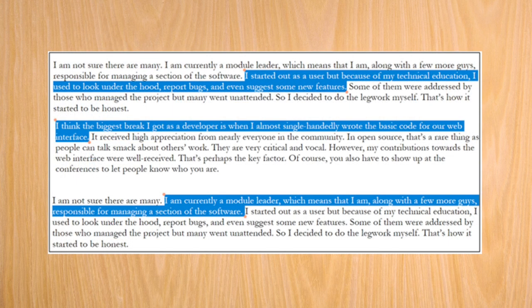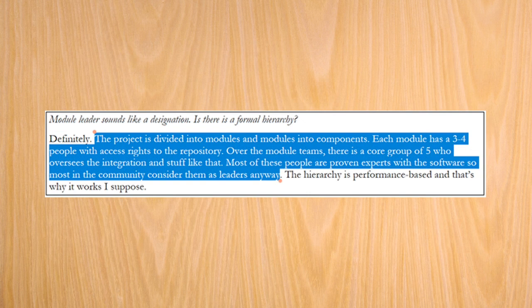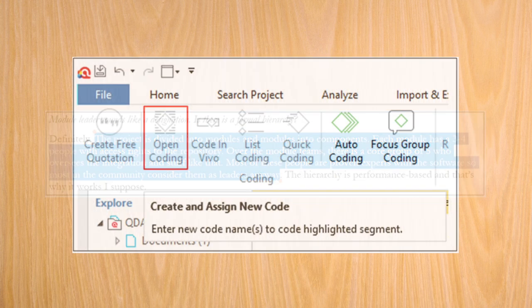Before starting the coding, however, it is usually a good practice to go over the whole document, so as to get a general sense of what it entails. For example, in this document, I can see that the interviewer is talking about their initial activities as the software user, their prominent contributions and their current positions that of a module leader. The respondent is also talking about more general issues such as hierarchy in the project, selection of the leadership teams and the role of the community in software development. Having such broad understanding of the document is important because it may suggest main themes appearing in the document. Personally, I have found having the overall view of the text to be highly useful for coding.